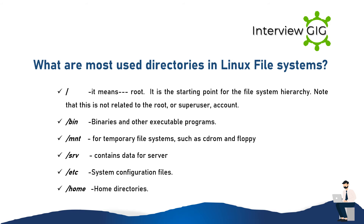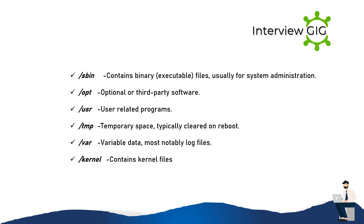What are the most used directories in the Linux file system? /: root — the starting point for the file system hierarchy, not related to the root user account. /bin: binaries and other executable programs. /mnt: for temporary file systems such as CD-ROM and floppy. /srv: contains data for servers. /etc: system configuration files. /home: home directories. /sbin: contains binary executable files usually for system administration. /opt: optional or third-party software. /usr: user-related programs. /tmp: temporary space, typically cleared on reboot. /var: variable data, most notably log files. /boot: contains kernel files.